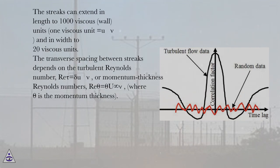The streaks can extend in length to 1000 viscous wall units (1 viscous unit = U*/ν) and in width to 20 viscous units.